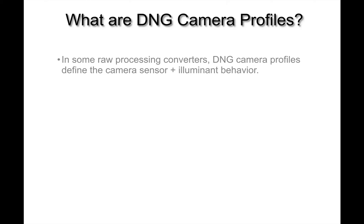Before we go into Lightroom, Camera Raw, and so forth, we'll go through a few slides so that we're all up to speed. Basically, what are DNG camera profiles? In some raw processing converters, DNG camera profiles are used to define the camera sensor — your specific camera sensor — and the effect of the illuminant that you're shooting under on that particular sensor. I'll talk about the illuminant behavior in detail, including when and where you need to build profiles under what lighting conditions.